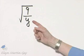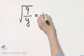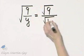Let's rationalize the denominator of this expression. If you'd like, you can write this as the square root of 9 over the square root of y.